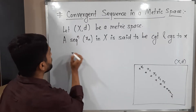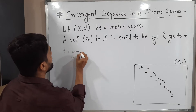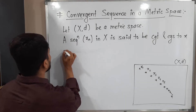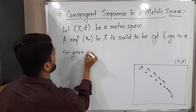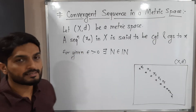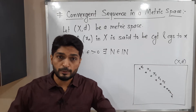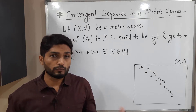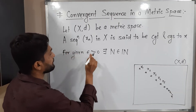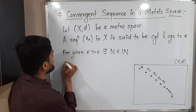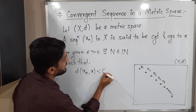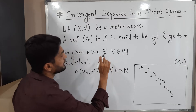The definition states: a sequence converges to X if, for given epsilon greater than zero, there exists N belonging to the set of natural numbers such that D(X_n, X) is less than epsilon for all n greater than or equal to this capital N. Here, epsilon is a very small positive real number. We use epsilon to define abstract concepts in calculus such as convergence, limits, and continuity.